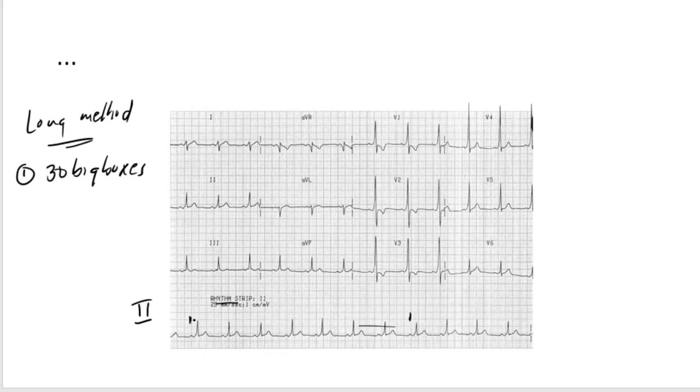So we want to start here at the beginning of the QRS complexes. So we start one, two, three, four, five, six, seven, eight, nine, ten, eleven, twelve. Up to here is 30. So we've counted 30 big boxes.